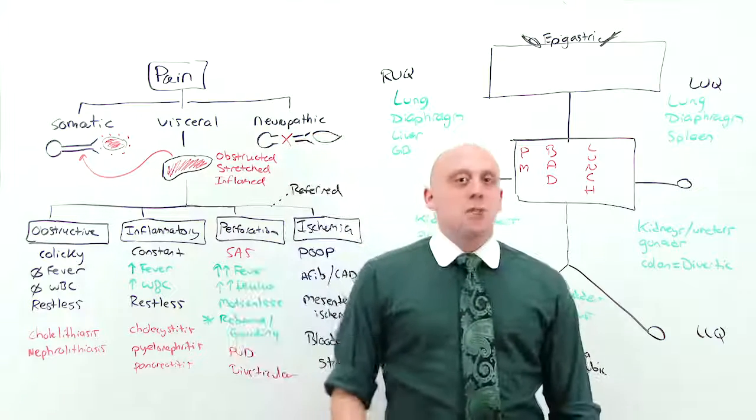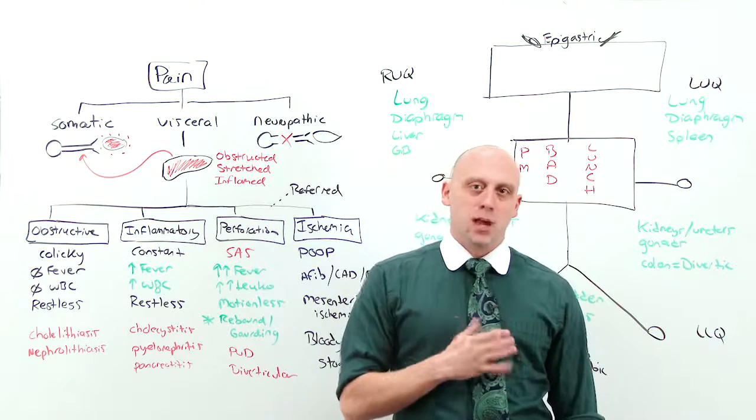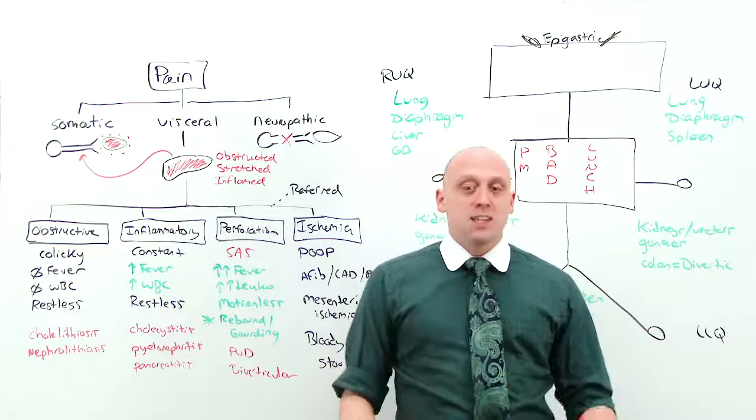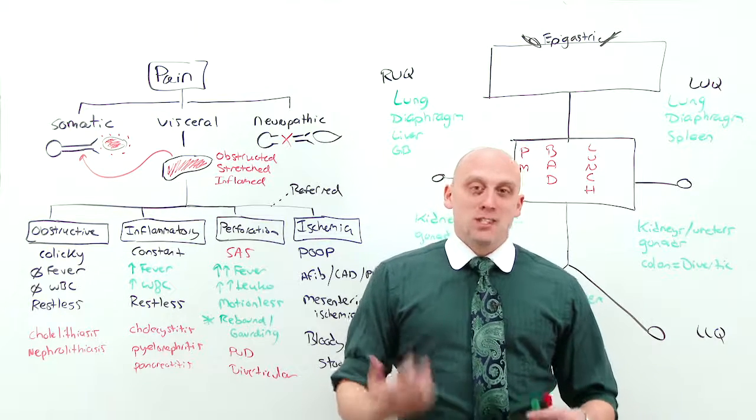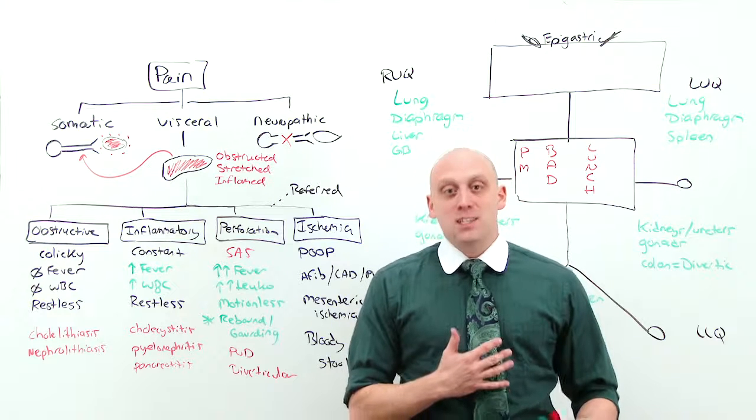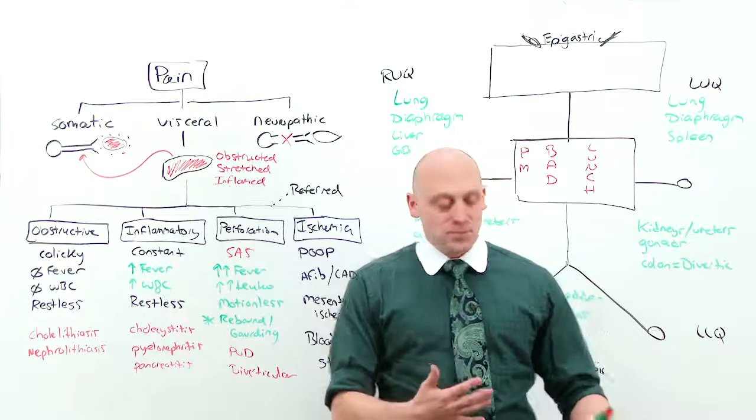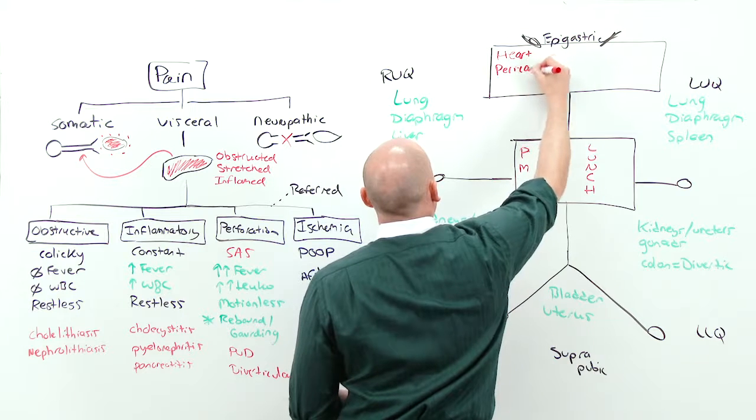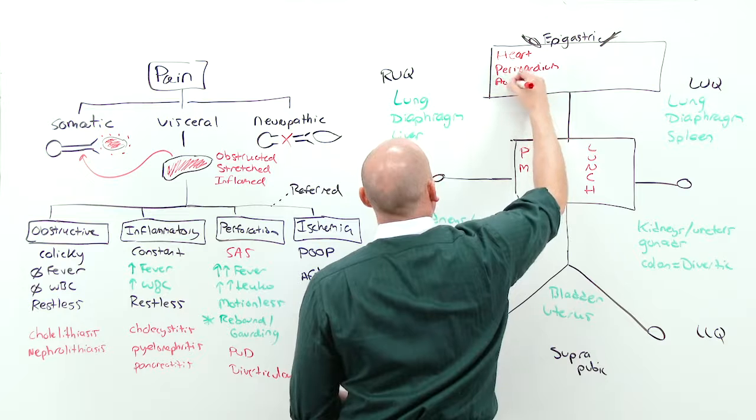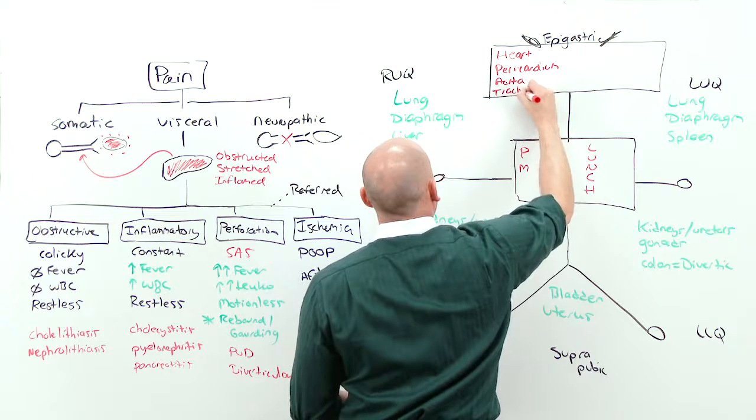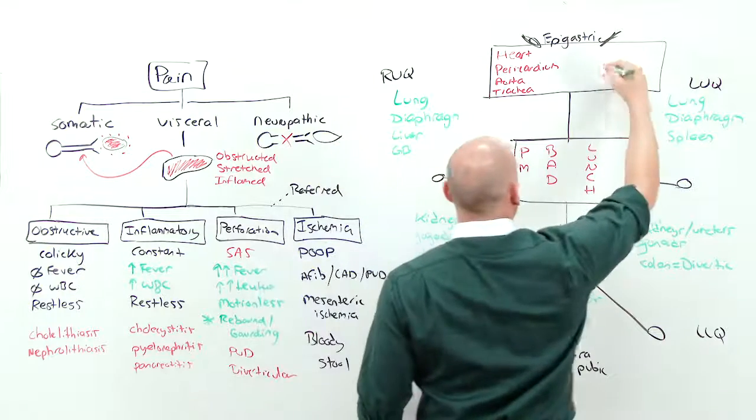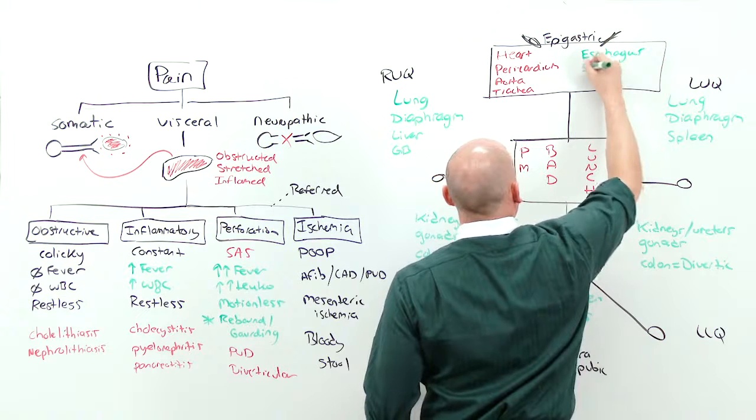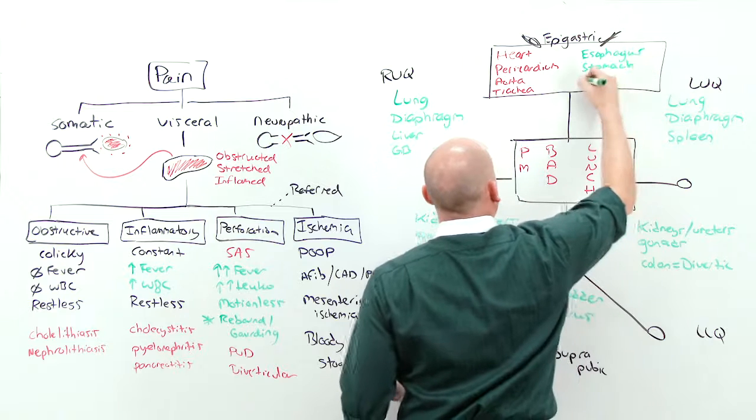The problem with this is that there's not much difference between, I've got some epigastric pain and, I've got chest pain. Remember, visceral pain is not pinpoint like somatic. It's generalized and vague. So if someone says, I have epigastric abdominal pain, you need to consider that also to be epigastric chest pain. So you do need to consider things like the heart, pericardium, aorta, and trachea. While you also consider the abdominal things like the esophagus, stomach, and pancreas.